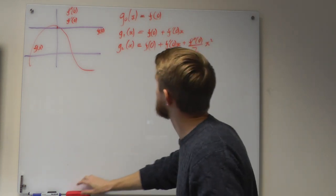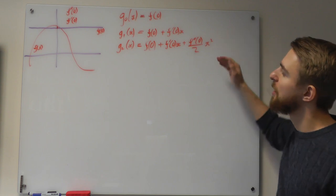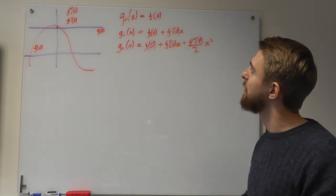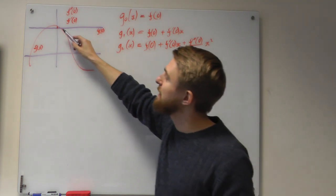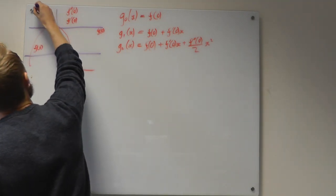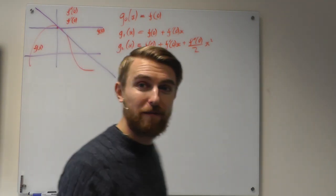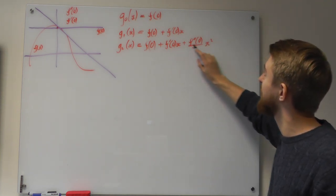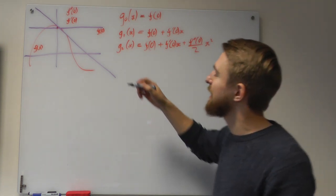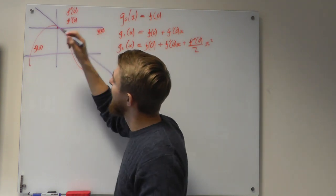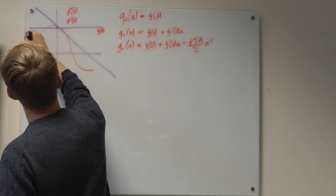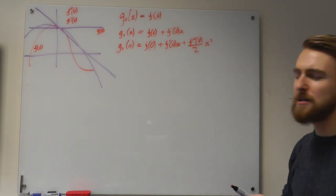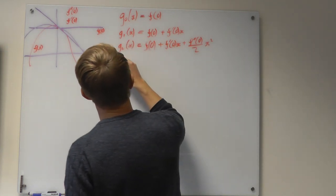Each time we improve our approximation we keep all the terms already found. We can now put g1 and g2 onto our graph: g1 is a line with the same gradient as the function at 0 — not a fantastic approximation but better than the first. g2 is a parabola with the correct y-coordinate, correct first differential, and correct second differential.